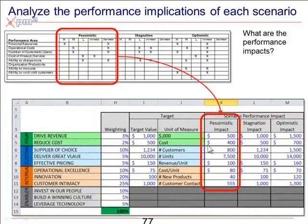We set some target performance numbers based on our initial scenario. Now, based on a pessimistic impact, for example, what is the impact going to be on each of these core metrics?